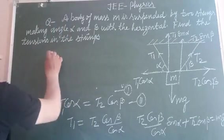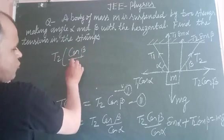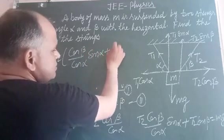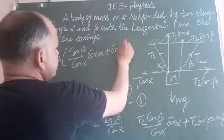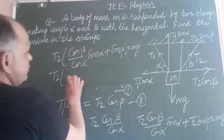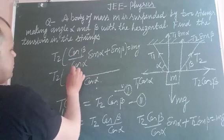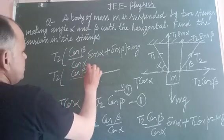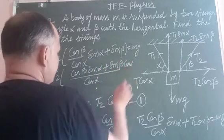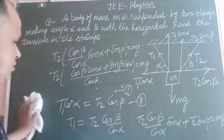Now we take T2 common from these two. T2, we're taking T2 common: cos beta over cos alpha into sin alpha plus sin beta equal to Mg. So T2 will be Mg times cos alpha divided by cos beta sin alpha plus sin beta cos alpha.